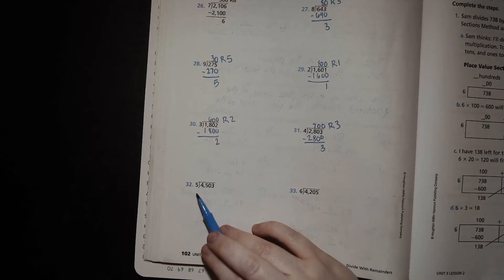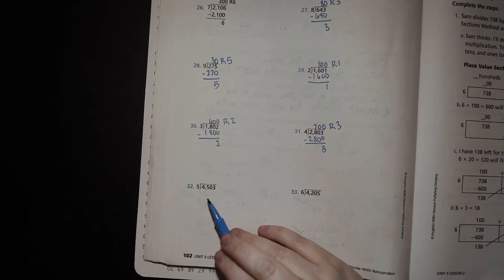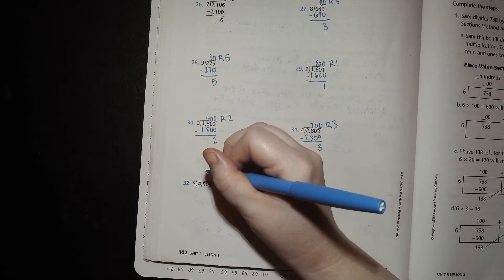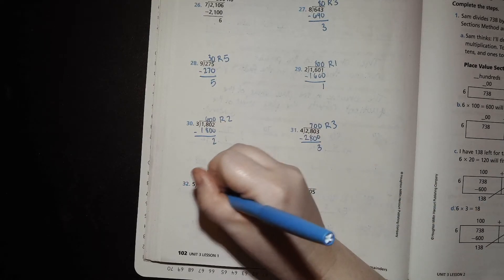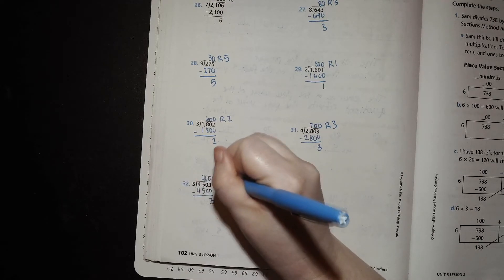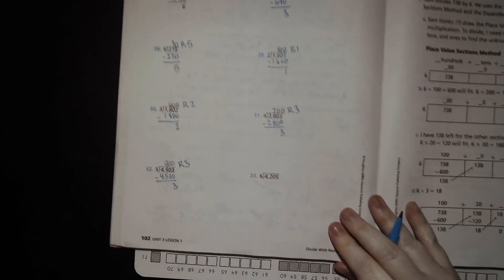4503 divided by 5. Well, 45 divided by 5 or 5 times what is 45? 5 times 9 is 45. So 5 times 900 would be 4500. So 900.